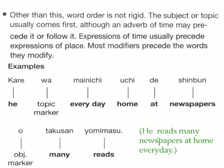For example: Kare wa mainiichi uchi de shinbun wo takusan yomimasu — he, everyday, home at, newspapers, many, reads. In other words, he reads many newspapers at home every day.